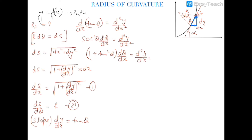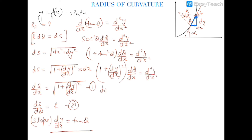Now tan θ is equal to dy/dx, so this becomes (1 + (dy/dx)²) · (dθ/dx) = d²y/dx². Therefore, dθ/dx = (d²y/dx²) · 1/(1 + (dy/dx)²). Let's call this equation number three.